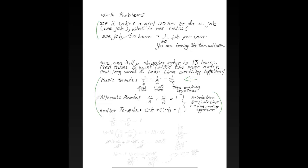Your book uses the second alternate formula, so we might as well use that. Let's let A be Sue's time working alone. That'll be 13. Let's let B be Fred's time working alone. And C is going to be the time working together. So our equation is going to be C over 13 plus C over 16 equals 1. Now we've got it.